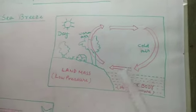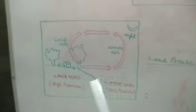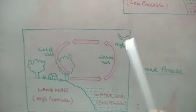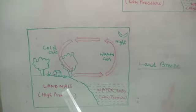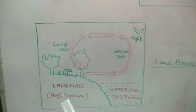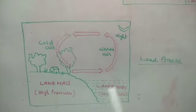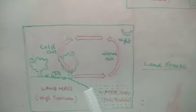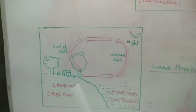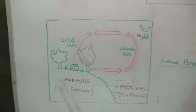Now there is land breeze, and there are some changes. In that particular diagram it is the scenario of nighttime — you can see the moon indicating nighttime. In the case of landmass there is high pressure, whereas during sea breeze there was low pressure over land. Now in case of landmass there is high pressure and in case of the water body there is low pressure. So why is there high pressure over land and low pressure over water at night?